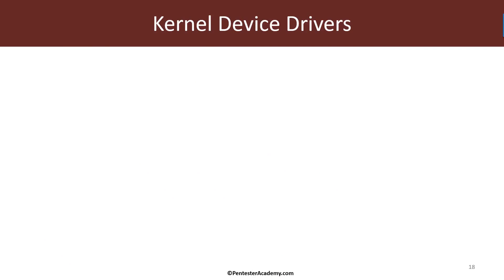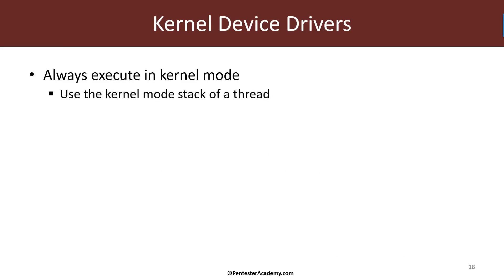Let's now examine some of the properties of kernel device drivers. Kernel device driver code always executes in kernel mode, which means it uses the kernel mode stack of a thread. As you might recall from perhaps an earlier course, a stack of a thread in kernel space is very small — roughly 12 kilobytes on 32-bit systems and 24 kilobytes on 64-bit systems by default. So we need to be careful not to use too much stack space.